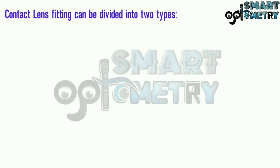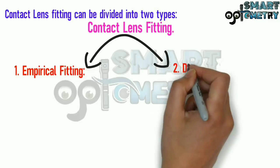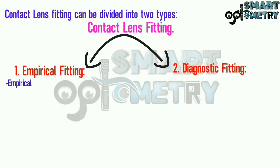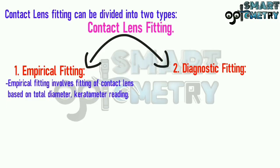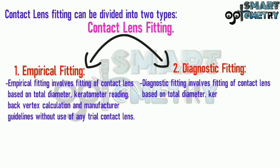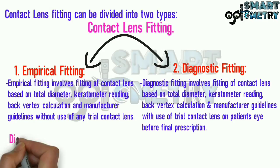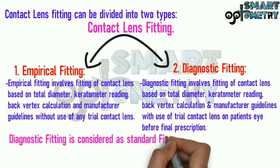Contact lens fitting can be divided into two types: empirical fitting and diagnostic fitting. Empirical fitting involves fitting of a contact lens based on total diameter, keratometer reading, back vertex calculation, and manufacturer guidelines without use of any trial contact lens. Diagnostic fitting involves the same parameters but with use of a trial contact lens on the patient's eye before final prescription. Diagnostic fitting is considered the standard fitting method.